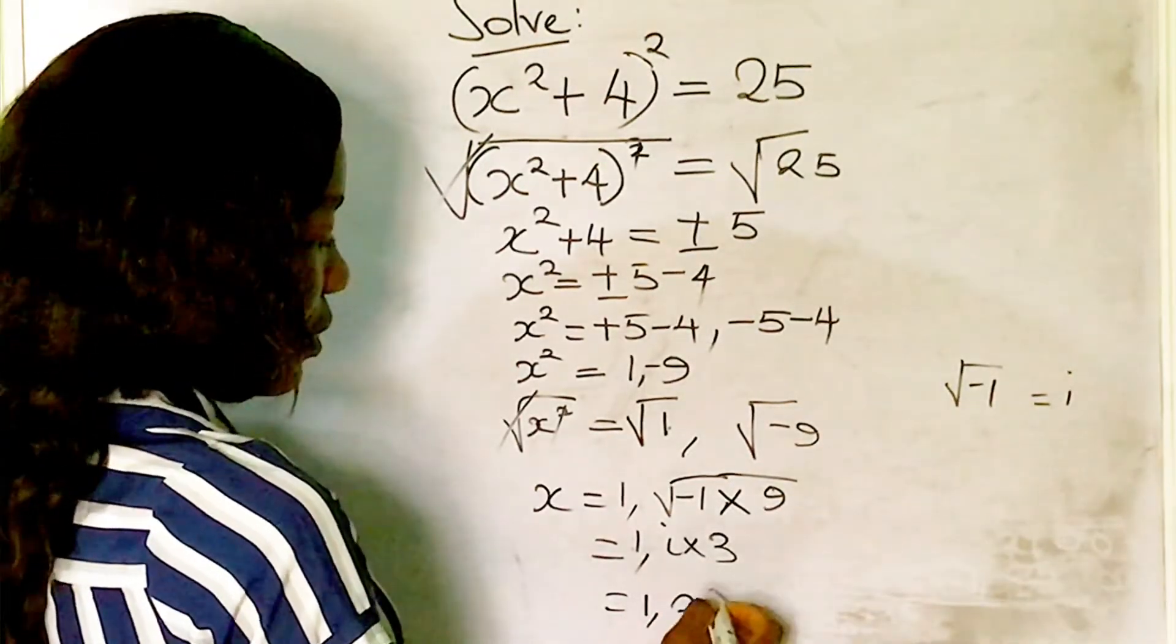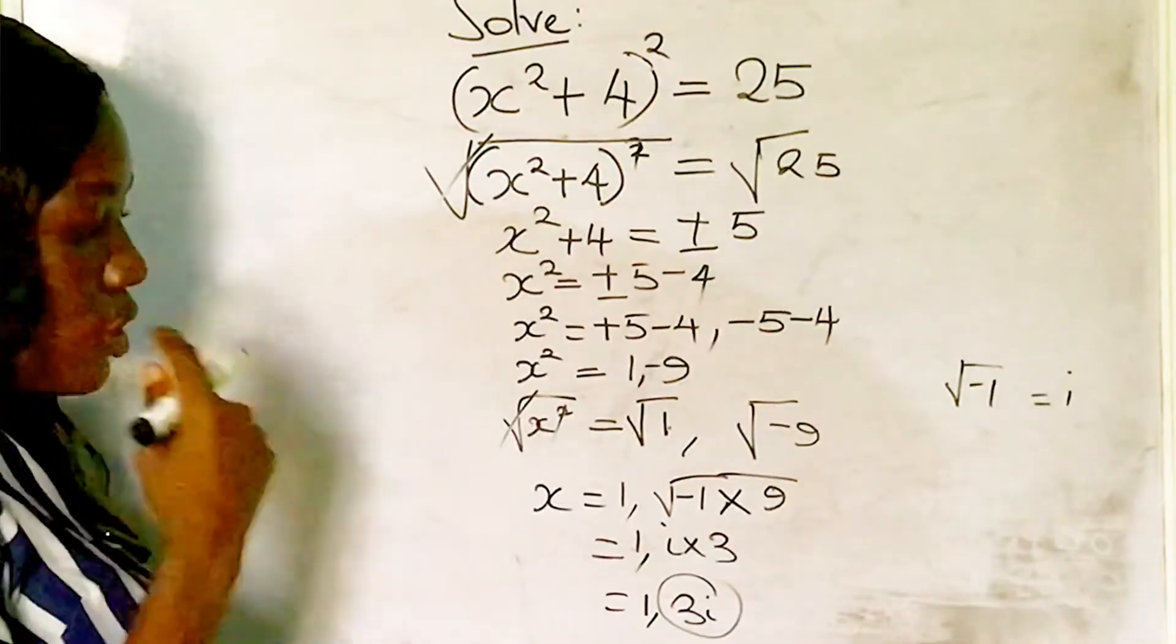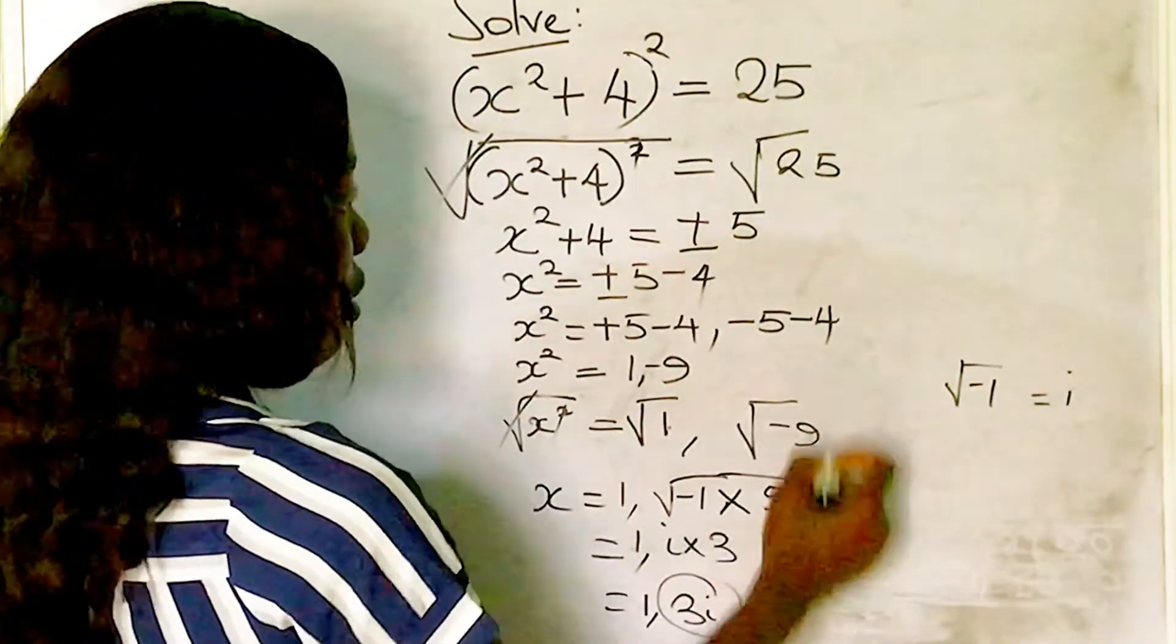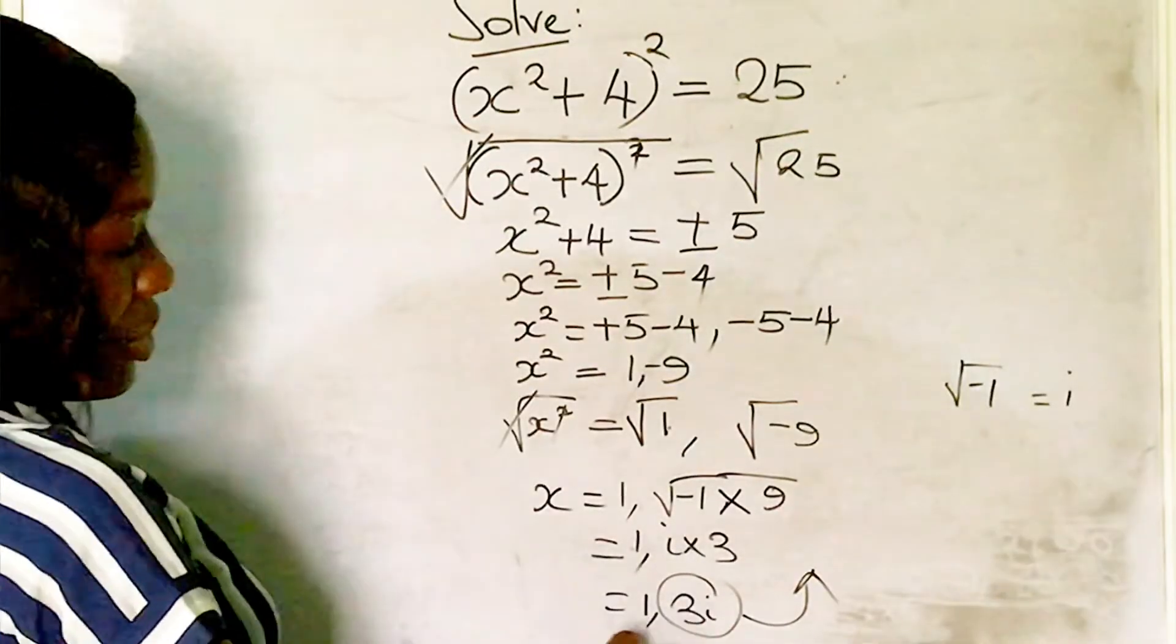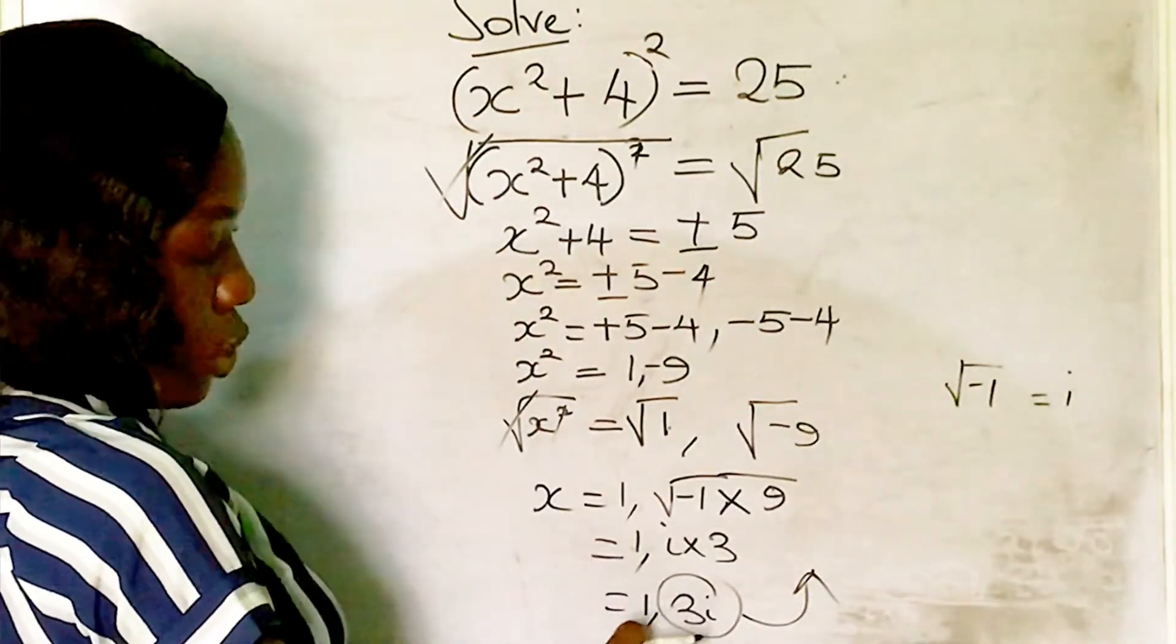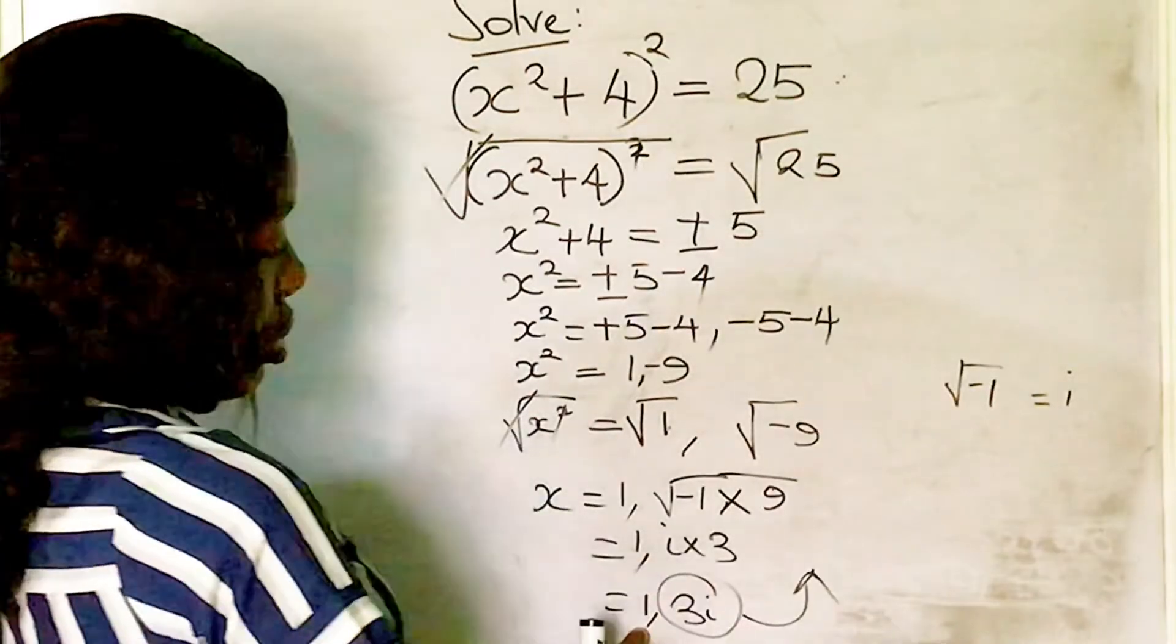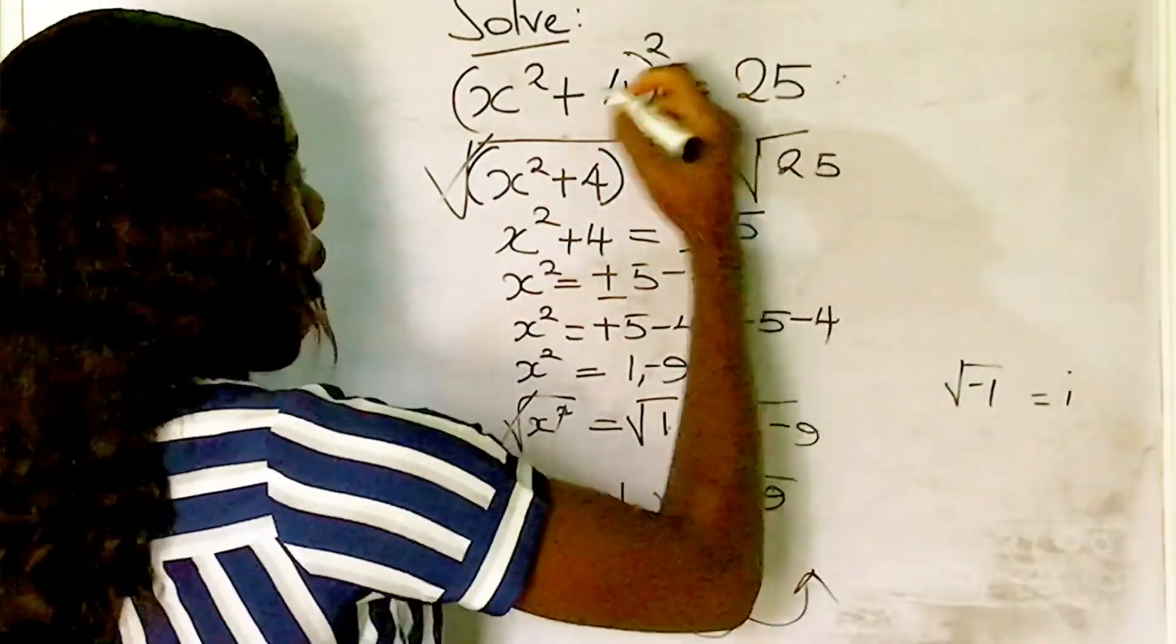Since 3i is an imaginary number, let's verify using the real solution. We have x = 1. Substituting into the original equation: (1² + 4)²...